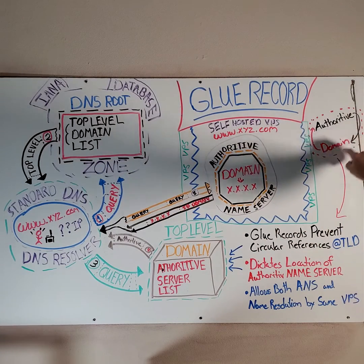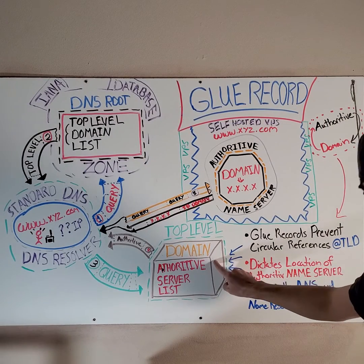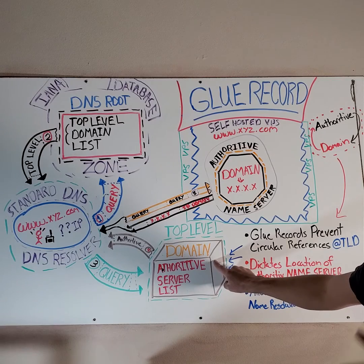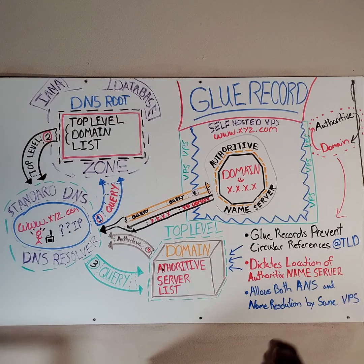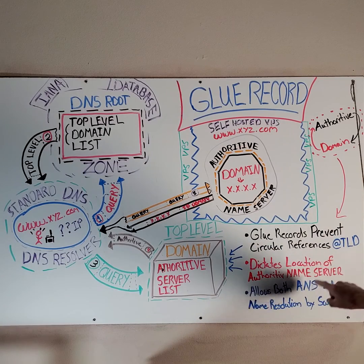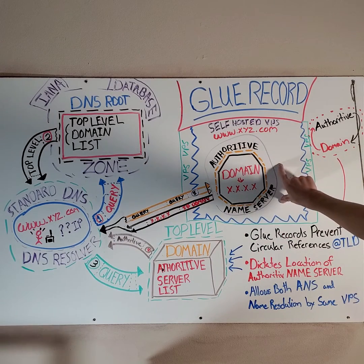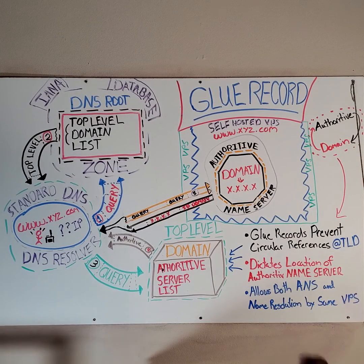So how do we break that authoritative domain cycle? Well, that's where Glue records come into place. What we do is we tell the top level domain server that our Glue record specifically tells us where our domain name level server is, and we also know where our authoritative level server is — and those are on the same virtual private server. That's done by putting in an A record, and I'll go into those later.